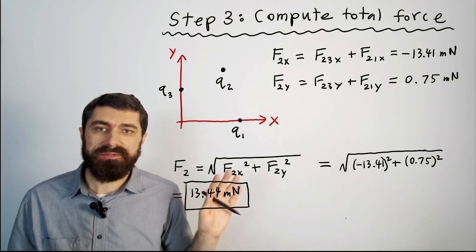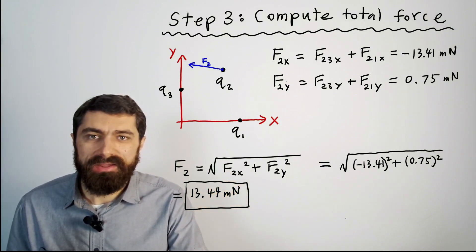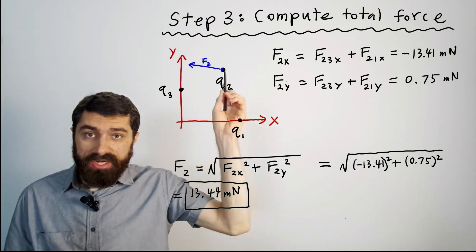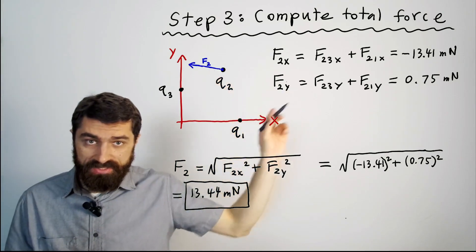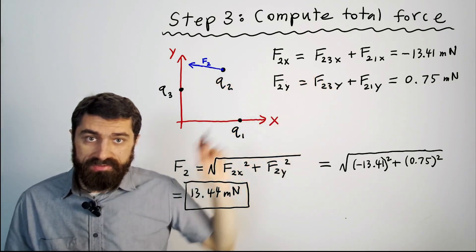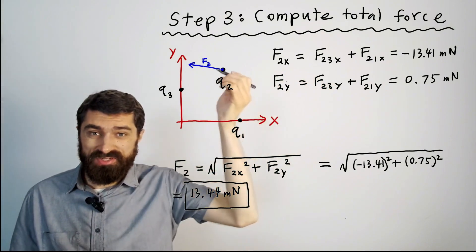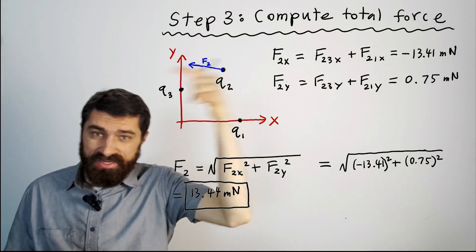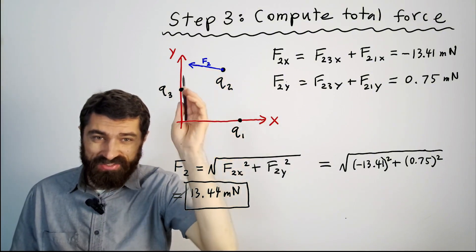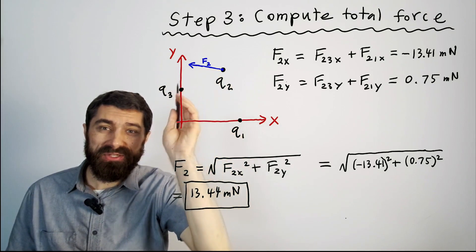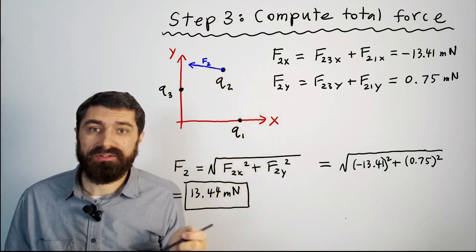Now before we end this problem it's always good to make sure that your answer makes sense. And if I were to sketch out this force here as an arrow it looks something like this because you can see the x component is negative 13.41 millinewtons. So it's got a strong component in the negative x direction this way and then it's got a slightly positive just 0.75 millinewtons going up there and so it's going to be oriented in that direction. But does that make sense?